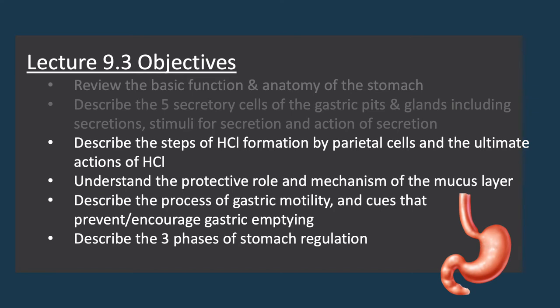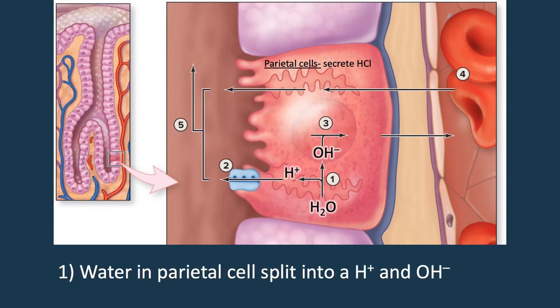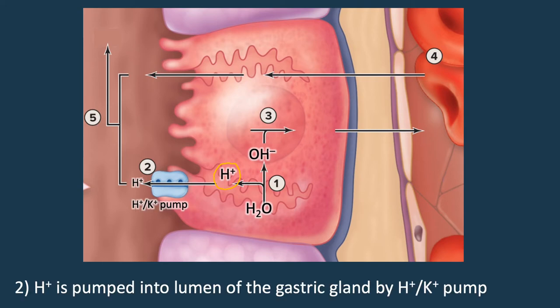Now we'll look at how parietal cells form hydrochloric acid. The parietal cells are responsible for the low pH environment in the stomach — around 1.5 to 2.5 — because they secrete HCl. The first step is splitting water: water inside the parietal cell dissociates into a hydrogen ion (H⁺) and a hydroxide ion (OH⁻). The next step uses a hydrogen-potassium ATPase pump — active transport — to pump that hydrogen ion into the lumen of the gastric gland while moving potassium into the cell against its gradient.